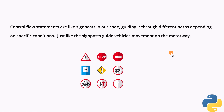Control flow statements are like signposts in our code. They guide it through different parts depending on specific conditions, just like a signpost guides vehicle movement on the motorway. We are going to start our coding with the most basic and fundamental control flow statement, which is the if statement. Let's open our Jupyter Notebook and start writing some code.